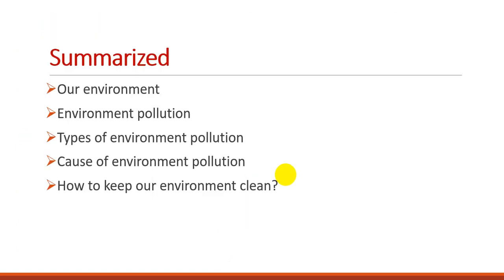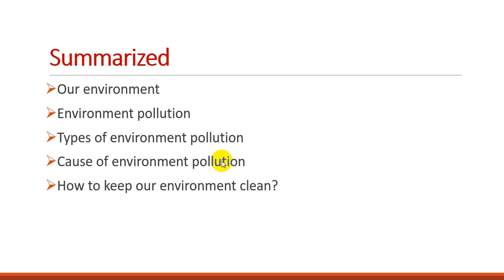Let me summarize. Our environment includes mountains and natural surroundings. Environmental pollution involves dust, waste, and chemical substances. There are different types of environmental pollution: water pollution, soil pollution, and noise pollution. We also looked at the causes of environmental pollution and how to keep our environment clean.